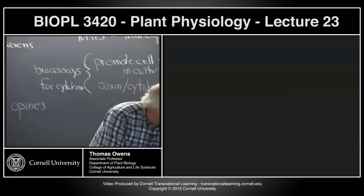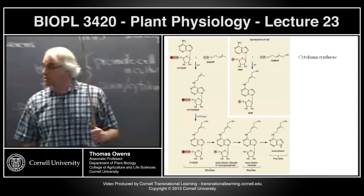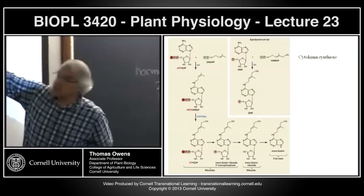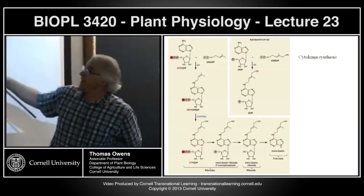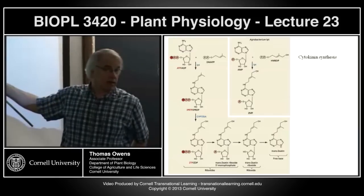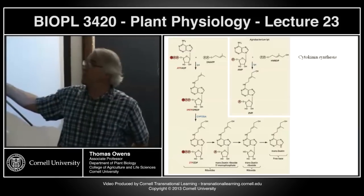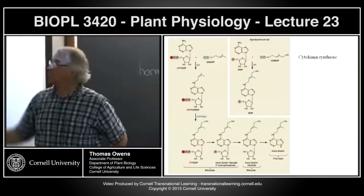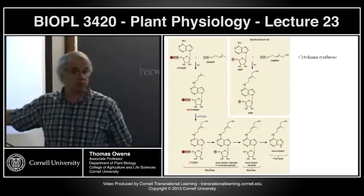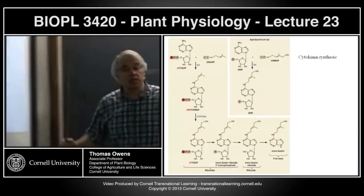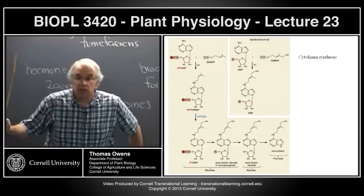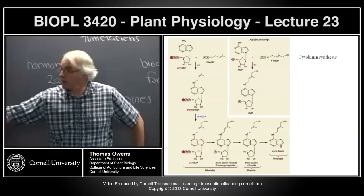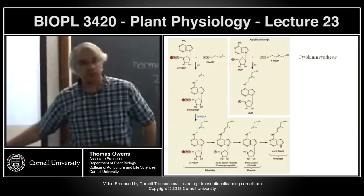Cytokinin biosynthesis is a relatively short pathway. The plant pathway starts with ATP and takes DMAPP — the common precursor of all the terpenoids — and puts the isoprene group onto the adenine, makes one modification adding a hydroxyl group. The intermediates associated with the synthesis of zeatin, the final product, are ribotides and ribosides. Since we're starting with ATP, this is a ribotide, and then there is sequential loss of sugars and phosphates to get to the final step.